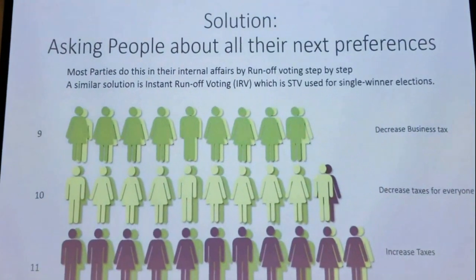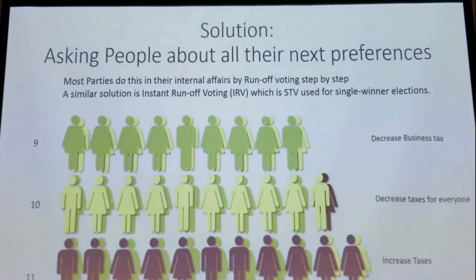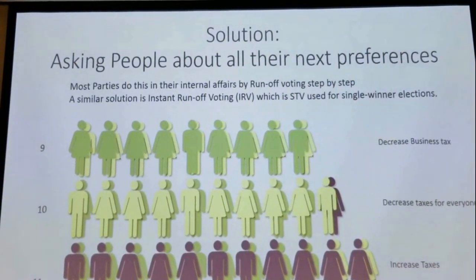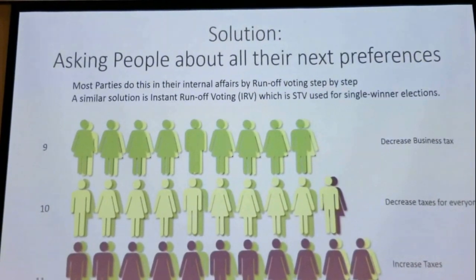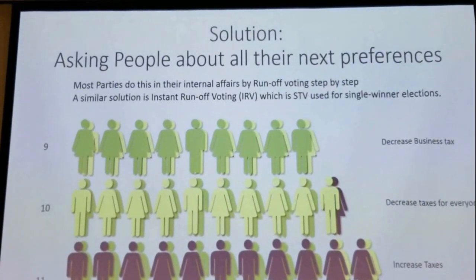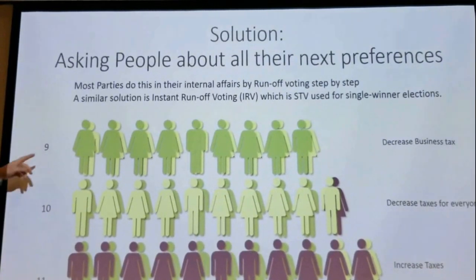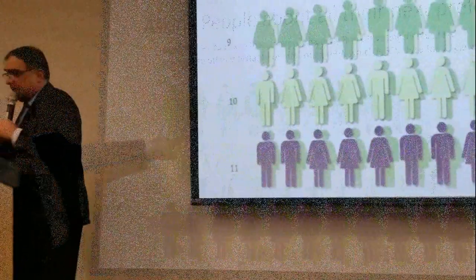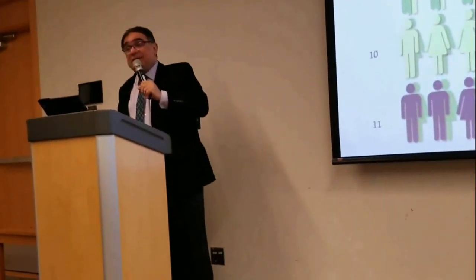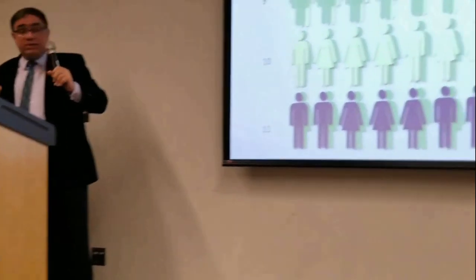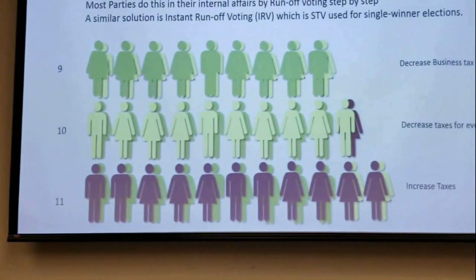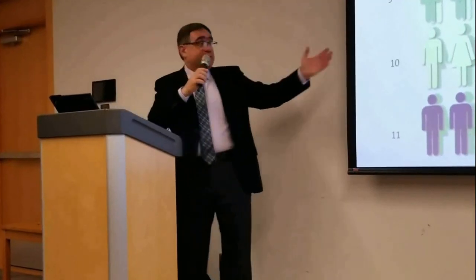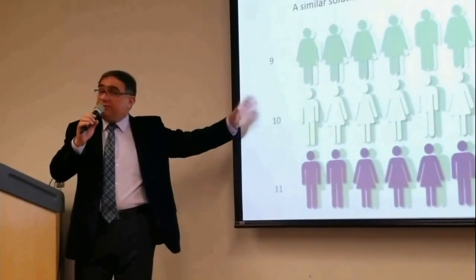The solution: the problem was that we didn't ask people their second, third, or fourth choice. The solution is to solve this information gap. We ask everyone their second choice — for example, people who want to decrease tax for businesses likely have a second choice of decreasing tax for everyone. The ballot that asks for these preferences is called a preferential voting ballot. This switch solves the fundamental information problem in the system.